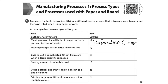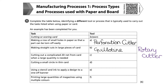This would generally be a guillotine, or maybe a rotary cutter, which you will commonly use in school. Cutting out a complicated 2D net from card when a large quantity is needed would be the job of a die cutter.